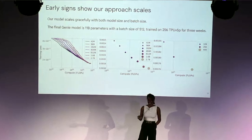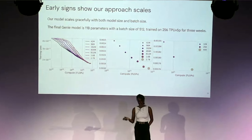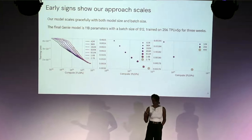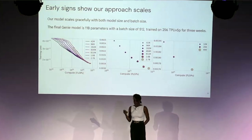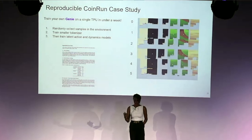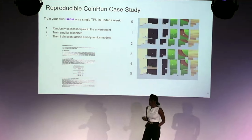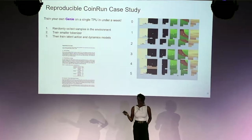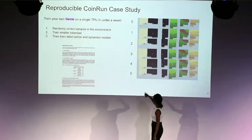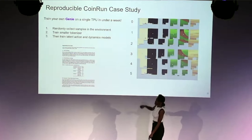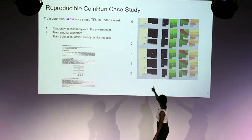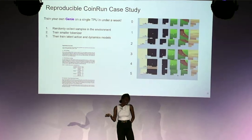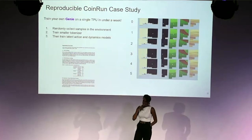Not surprisingly, scale helps. As we scaled the model size and batch size, loss decreased and performance improved, leading us to our final 11 billion parameter model with a batch size of 512. Not everyone has access to that compute, so we also provide a reproducible coin-run example in the paper that you can train in about a week with a single mid-range TPU. In that small-scale experiment, each row of visualizations corresponds to one learned latent action — for example, latent action 5 consistently moves left and latent action 0 stays still.